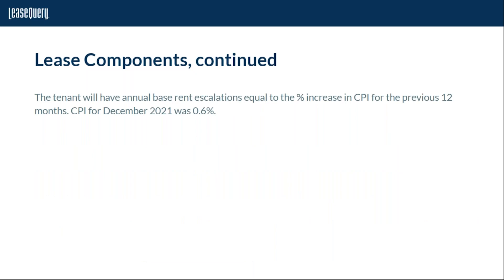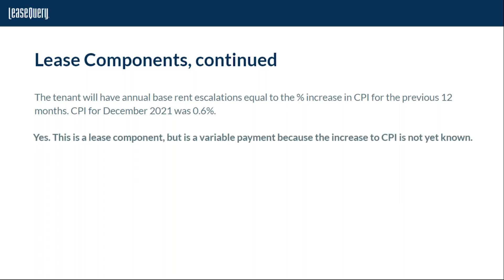The tenant will have annual base rent escalations equal to the percentage increase in CPI for the previous 12 months, with CPI used as a base to calculate the percentage increase. While this is a lease component, it is a variable payment because the increase to CPI is not yet known. It is not a variable payment based on a known index or rate, so it would not be included in the lease liability calculation.